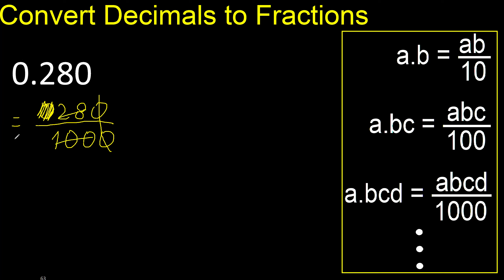Can be simplified because it can be divided by the same number. Divided by 2: 28 divided by 2 is 14, 100 divided by 2 is 50. Can be divided by 2 again — divided by 2 is 7, divided by 2 is 25.